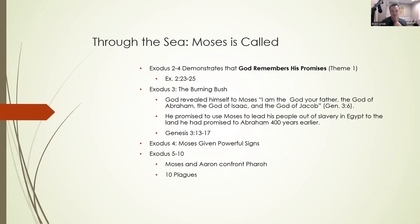In Exodus 2 through 4, we see that God remembers his promises — an important theme. More than 400 years before, God had promised Abraham he would make him a mighty nation, and revealed that his people would be enslaved but he would lead them out. In Exodus 2:23-25: 'During those many days, the king of Egypt died, and the people of Israel groaned because of their slavery and cried out for help. Their cry for rescue from slavery came up to God, and God heard their groaning, and God remembered his covenant with Abraham, with Isaac and with Jacob. God saw the people of Israel, and God knew.'